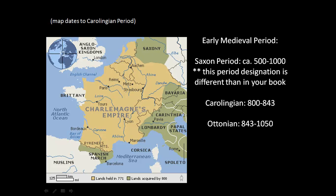In this online lecture we are in our third installment of the early medieval period, looking at the Ottonian period. The Ottonian period is different from the Carolingian period because it marks a change in rulership, with Otto I, II, and III. There were also two queens who ruled as regents: Queens Adelaide and Theophanu.